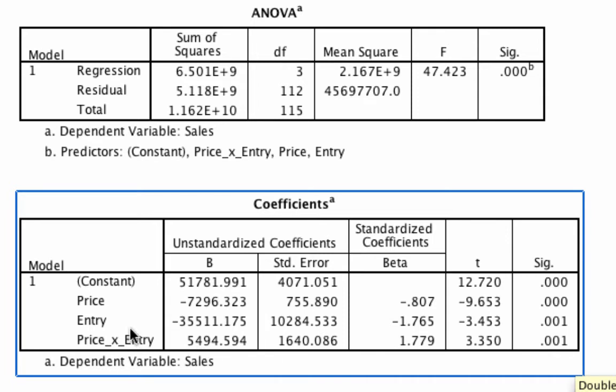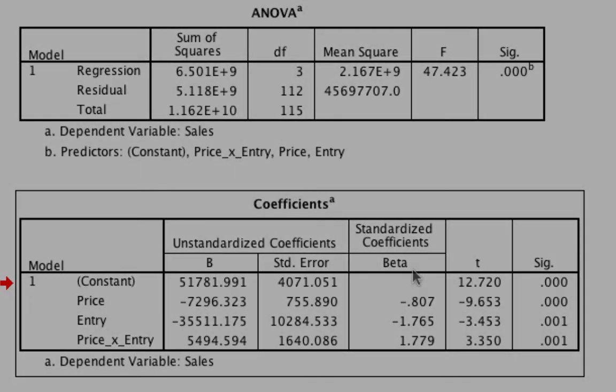And we also see that there's this interaction term, which means that the influence of price on sales is different prior to and following competitor entry. The best way to really think about this is to graph it. And so I'll do that for you here.